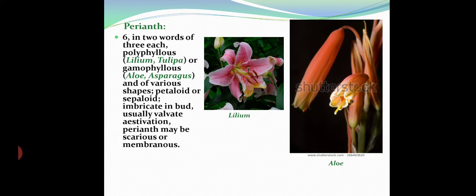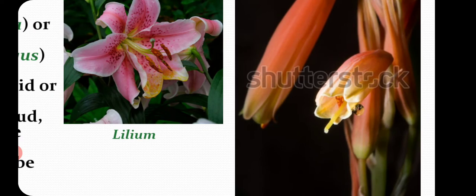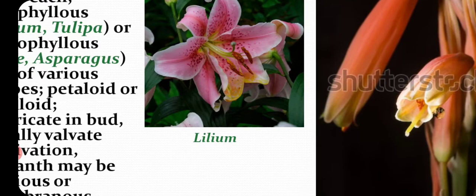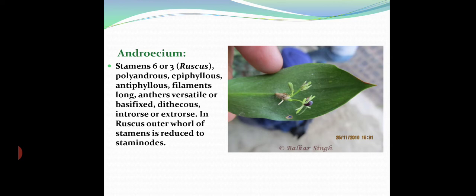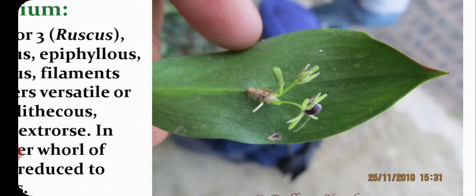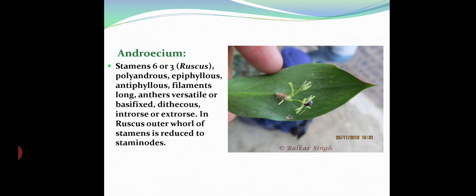The perianth may be polyphyllous — that is, free — as in Lilium and Tulipa, or gamophyllous — that is, fused — as in Aloe. The term used is polyphyllous or gamophyllous rather than polypetalous or gamopetalous because it is a perianth, not distinct petals. The perianth is of various shapes, petaloid or sepaloid, imbricate in bud condition, usually valvate in aestivation, and may be scarious or membranous.